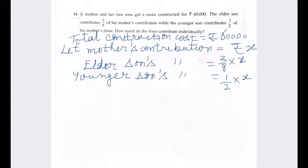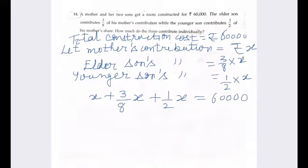So, let us see, X rupees are given by mother. 3 by 8 of X given by elder son. Half of X given by younger son. And, total money that is spent is Rs 60,000. So, we have to solve this equation.